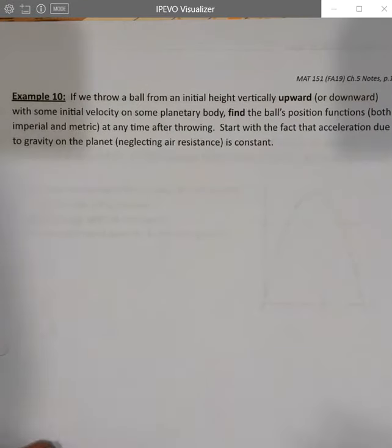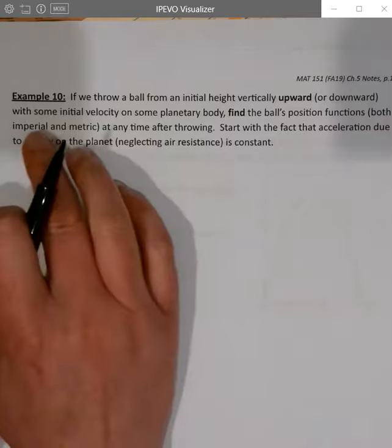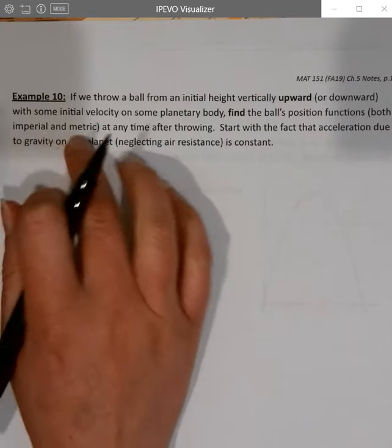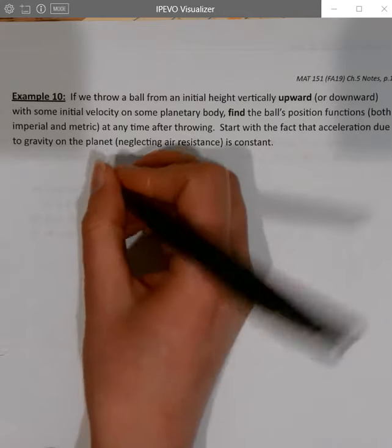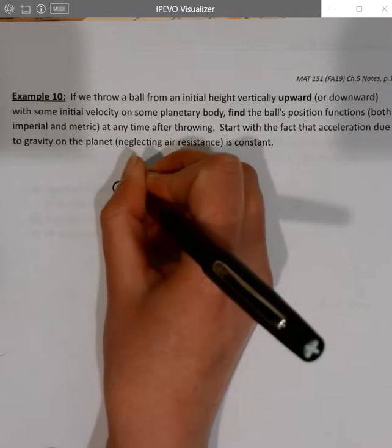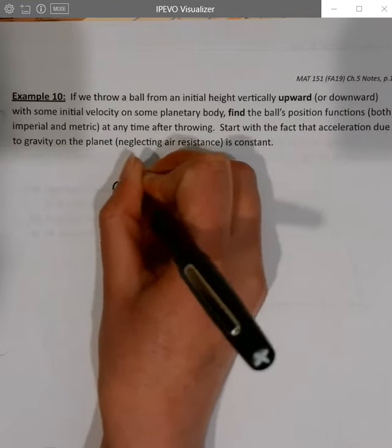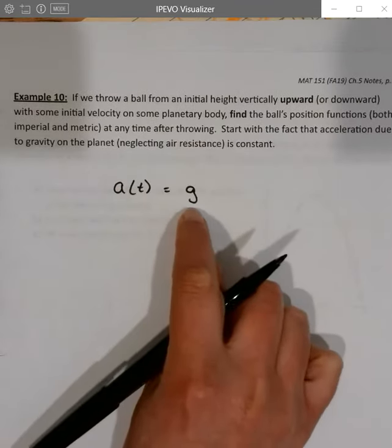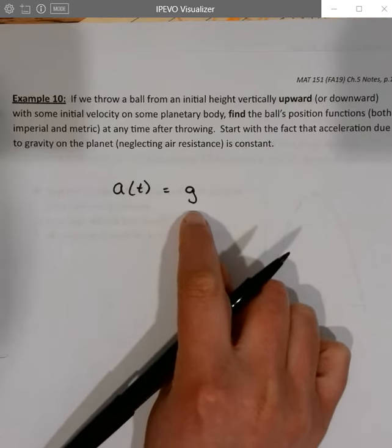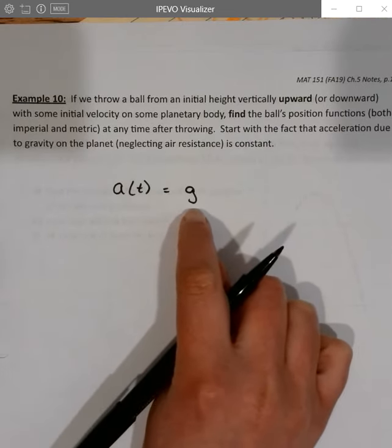Start with the fact that acceleration due to gravity is constant. I'm just going to keep gravity as g for the moment since I can do it generally. If I just toss something that's not going to accelerate itself, its only acceleration force is going to be gravity. So g is just the gravitational constant, it's a number.